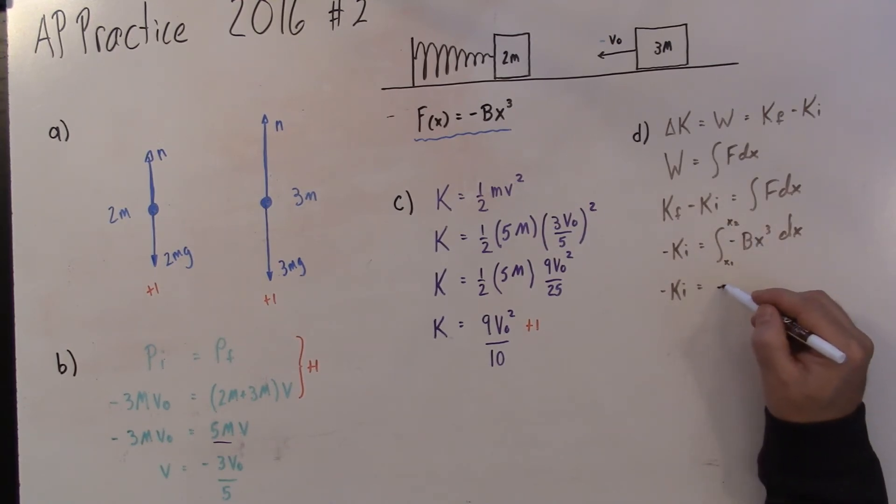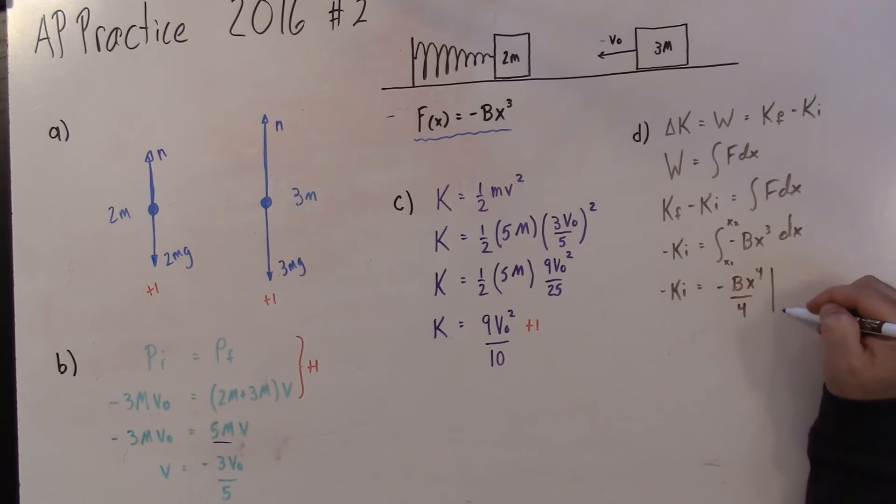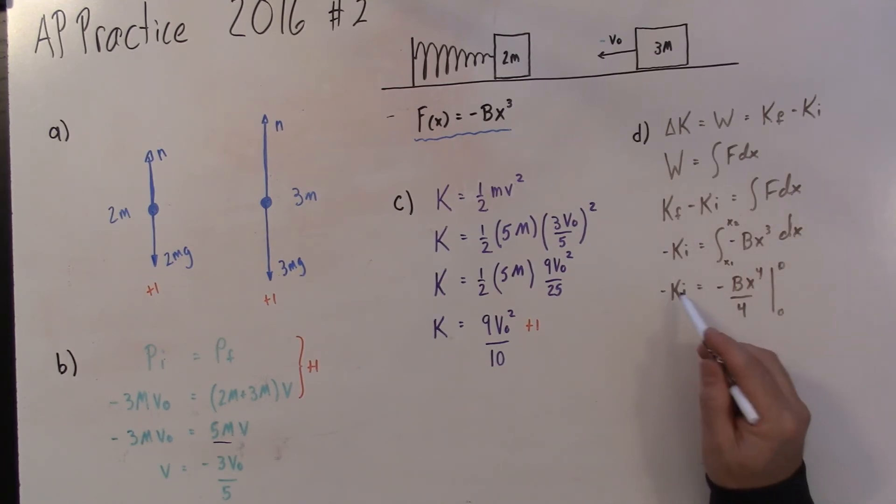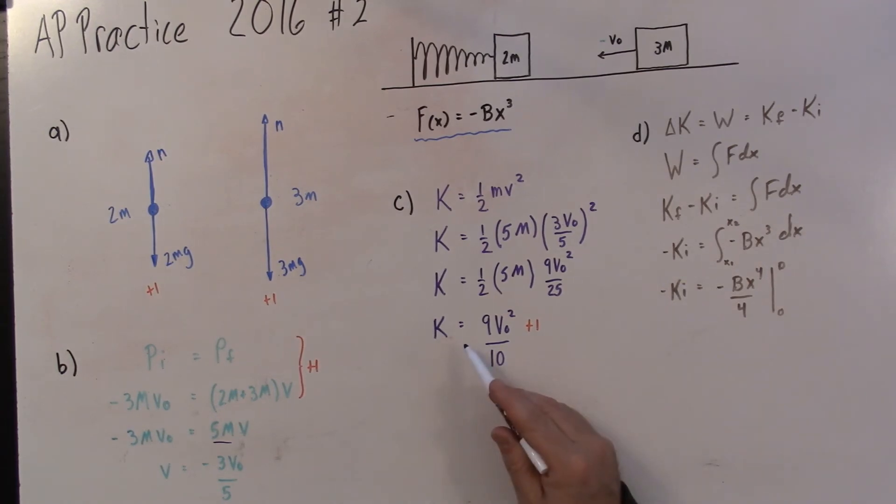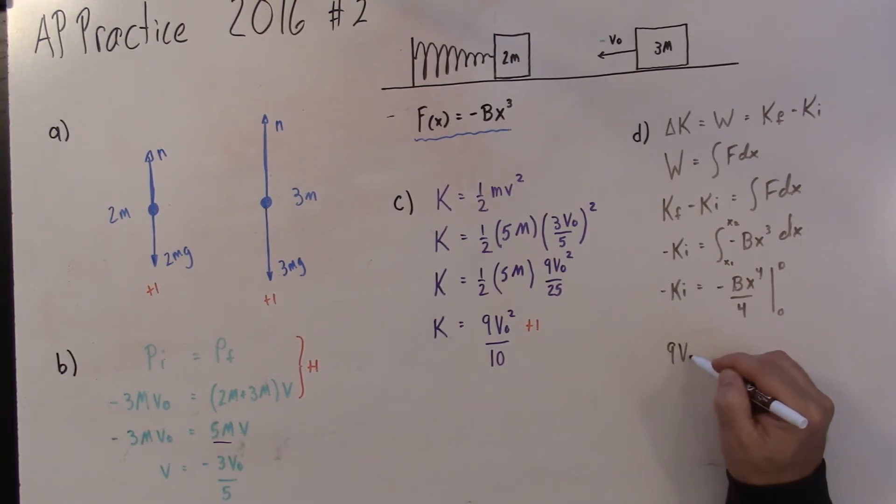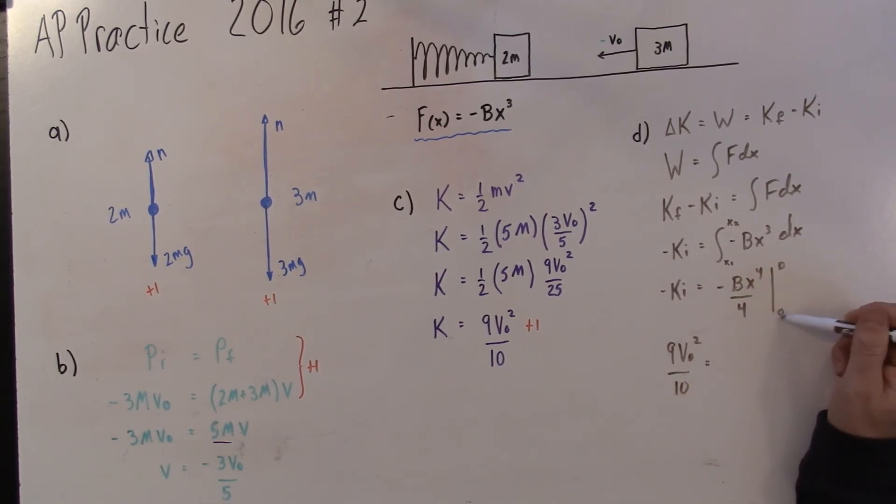When I take the anti-derivative, I have negative Bx to the fourth all over four. We're trying to find the distance it compresses d. So it gets compressed from zero to d. I'm going to get rid of the negatives. So the initial kinetic energy, 9v0 squared all over 10, equals Bd to the fourth all over four. Now I want to solve for d. I'm going to multiply both sides by four and simplify.